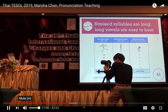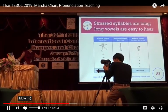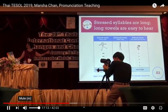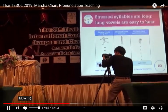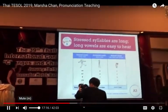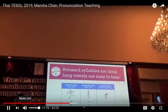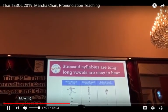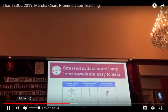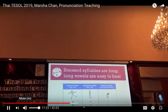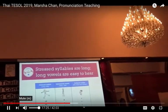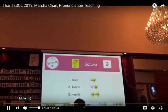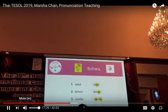Stress is long. The long vowels are easy to hear. So we have long vowels — if we make them long, they're easy to hear. If we make them really short, they're hard to hear. What do we call that vowel that's not easy to hear?